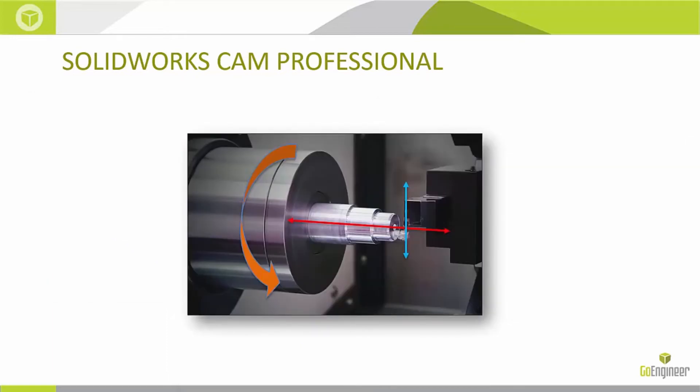We also have two-axis turning. On a turn machine, we no longer spin the tool on a stationary part — instead, the tool is held stationary and the part spins around the red axis (the orange arrow). That red axis controls where the tool cuts along the length of the part, and the second axis — the blue arrow — controls the diameter as we machine the part on the turn machine.